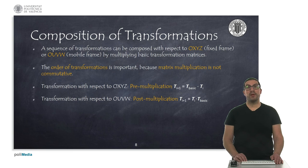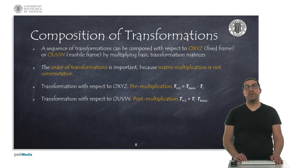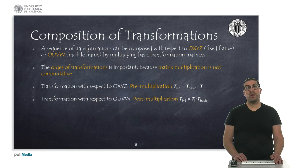In the case of performing a transformation with respect to the fixed frame, we must apply a pre-multiplication, which means that to the current transformation matrix, we must pre-multiply a basic transformation matrix. On the other hand, if the transformation is performed with respect to the mobile reference frame, then the resulting transformation matrix is obtained by post-multiplying the current transformation matrix with the basic transformation matrix.